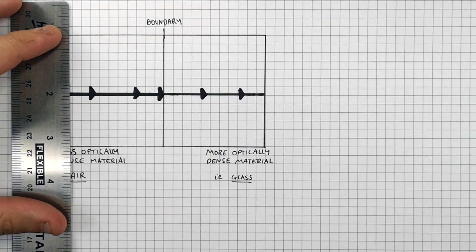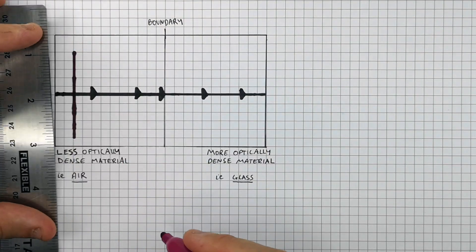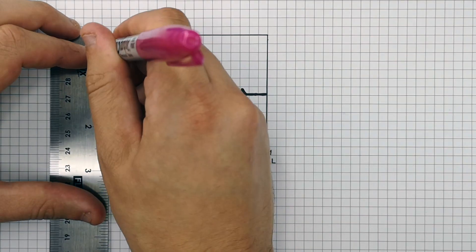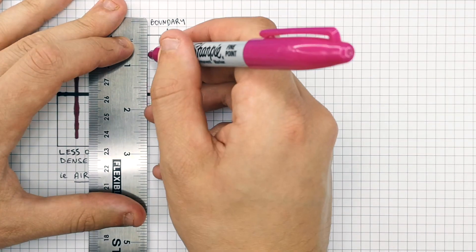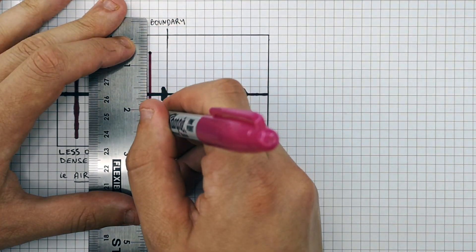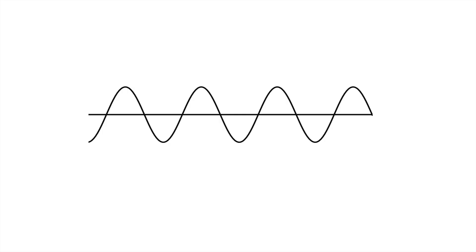What I'm drawing now represents the wavefronts. These are imaginary lines perpendicular to the ray — at 90 degree angles to the ray, not the normal and not the boundary. The wavefronts represent parts of the wave one wavelength apart from one another.